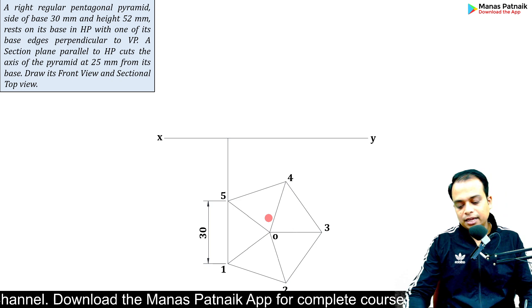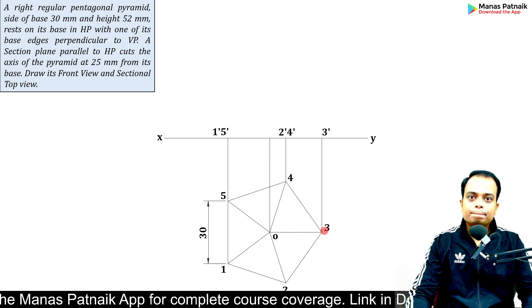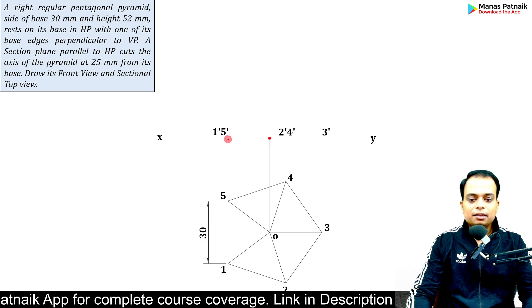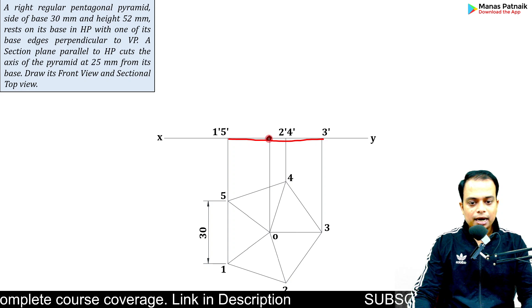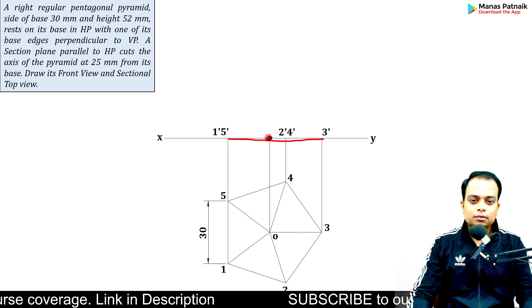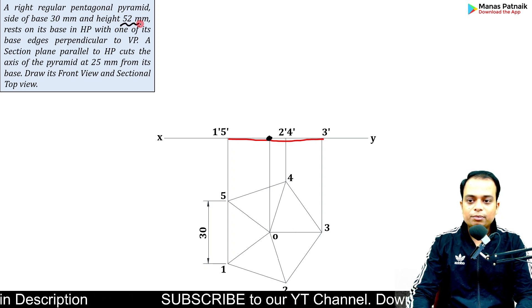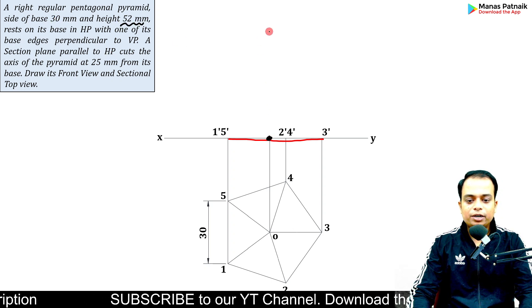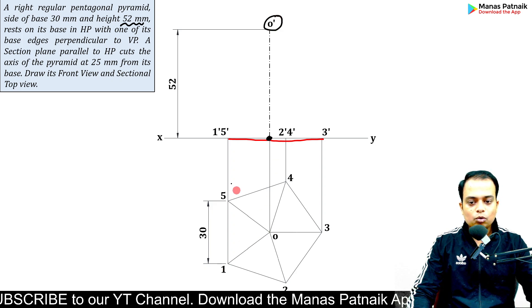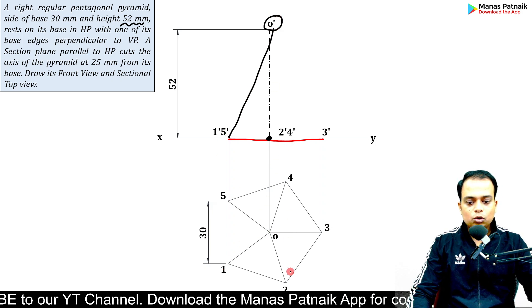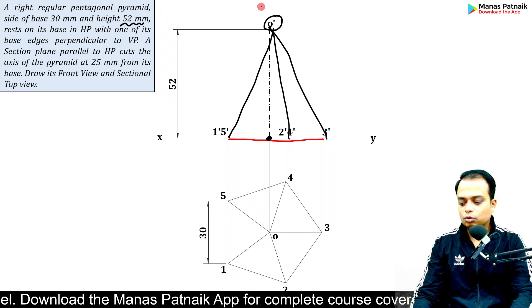These happen to be the slant edges O3, O4, O5. But how do they look in the front? Let me draw the projectors through O, 4, 2, and 3. This is the base of the pyramid, and this is the base of the axis.